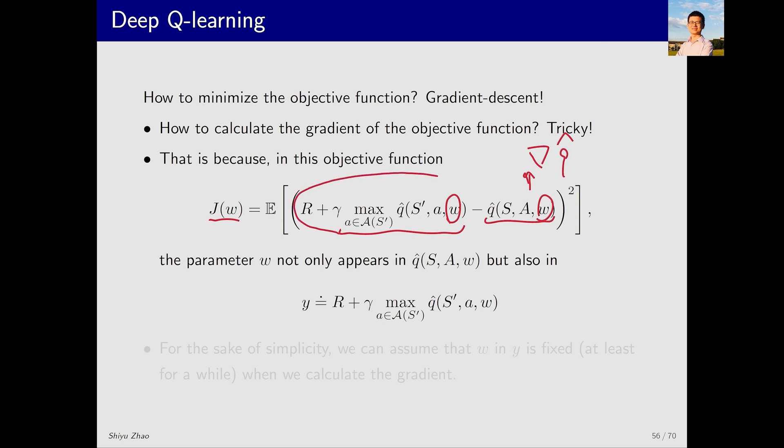Let's denote the entire expression as Y. Deep Q-learning assumes that W inside Y is a constant. Computing the gradient then becomes simpler. This is the basic idea for deep Q-learning to solve this problem. Now let's examine it more closely.